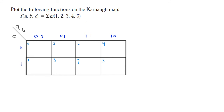Plotting the function: we have minterm 1, so a 1 goes in the 1 spot. A 1 goes in the 2 spot, we've got a 3 so a 1 goes there, then 4 and 6. The blank spots are just 0s.